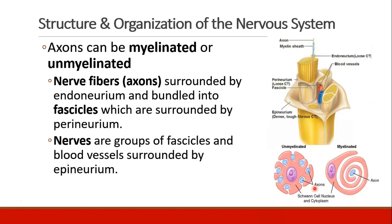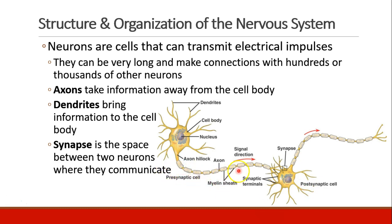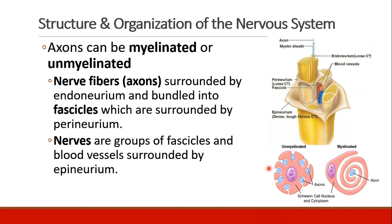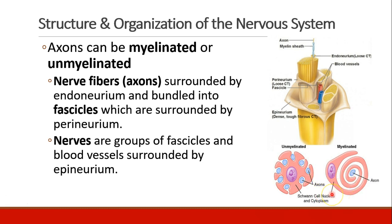Axons can be myelinated or unmyelinated. We see the myelin sheath surrounding the axon in this diagram. Nerve fibers are created by bundles of axons, which have a myelin sheath and are surrounded by endoneurium. These bundles are then surrounded by perineurium, and finally the entire nerve is surrounded by epineurium. Nerves also have vasculature within them to supply the nerves. This diagram also shows myelinated and unmyelinated nerves and the Schwann cell that provides the myelin.